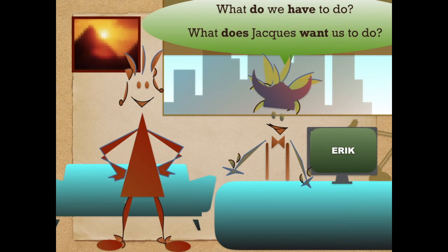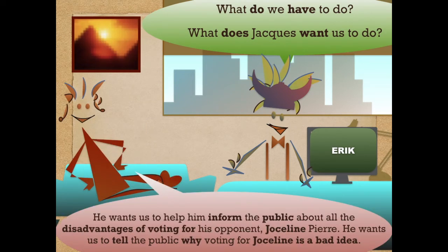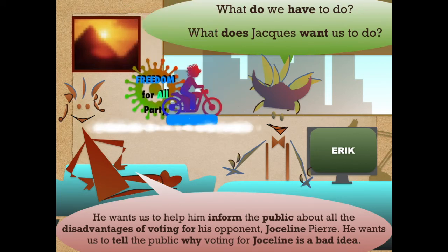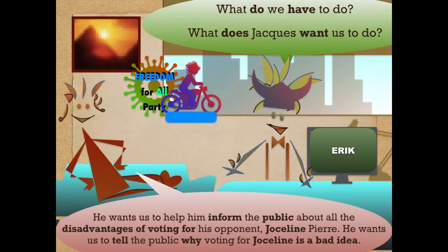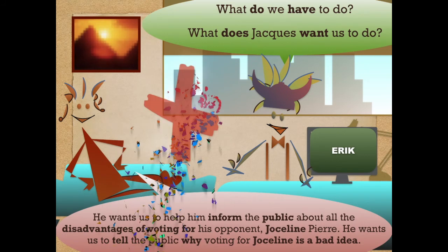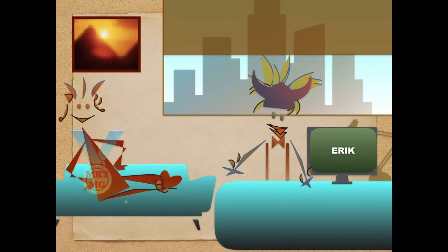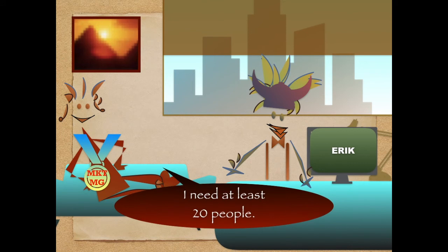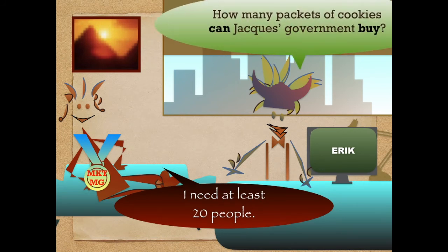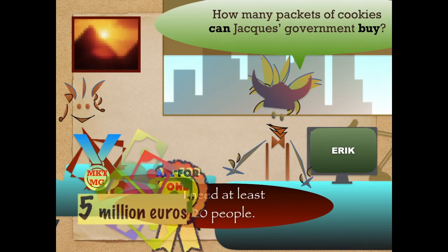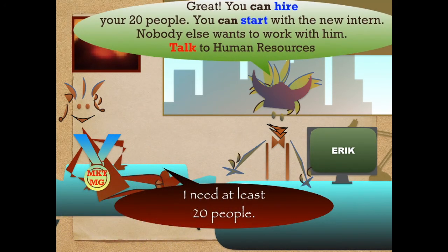She needs to be brave and pitch her deal in a positive way. 'Well, what do we have to do? What does Jack want us to do?' 'He wants us to help him inform the public about all the disadvantages of voting for his opponent, Jocelyn Pierre. He wants us to tell the public why voting for Jocelyn is a bad idea.' 'Okay, that sounds easy. We can do that, can't we?' says Eric. 'Oh yes, we can. I mean, I can. I want my promotion, remember. But I need help. I need at least 20 people. It's a lot of work. How many packets of cookies can Jack's government buy?' 'He says he can make a first order for about 5 million euros.' 'Great, that's wonderful news. So yes, absolutely, you can hire your 20 people,' says Eric, smiling happily. 'You're a heroine Jane. You will save this company, girl.'